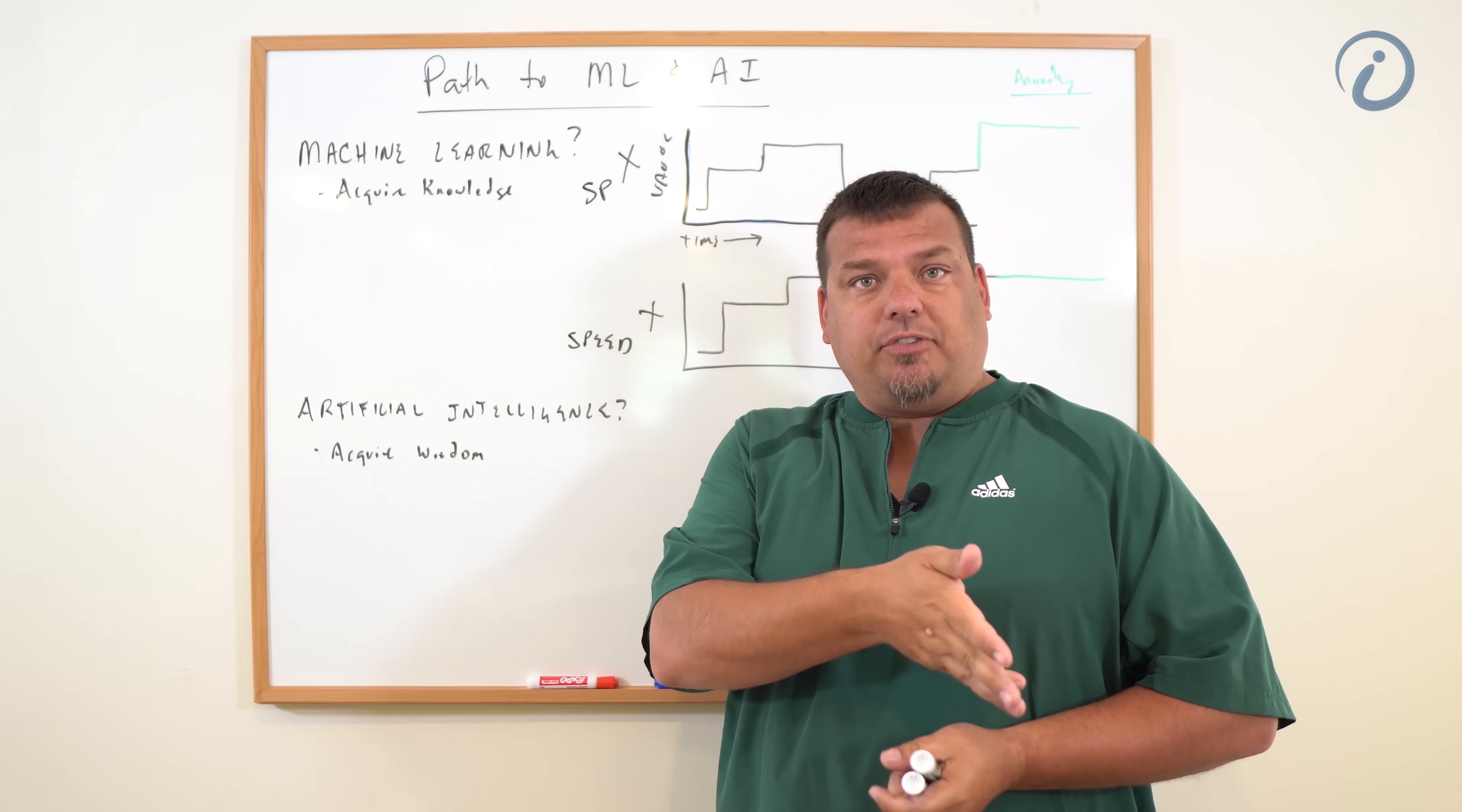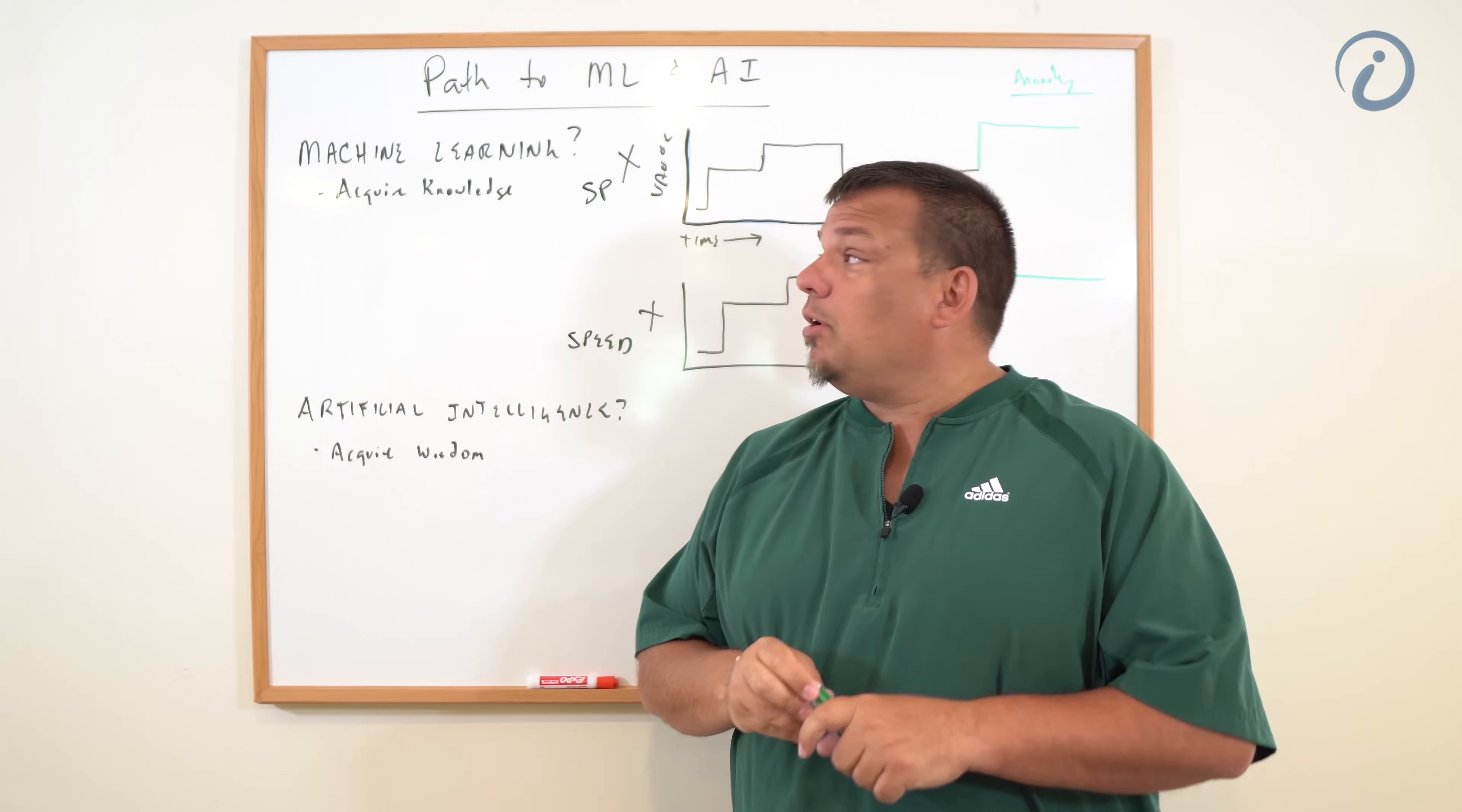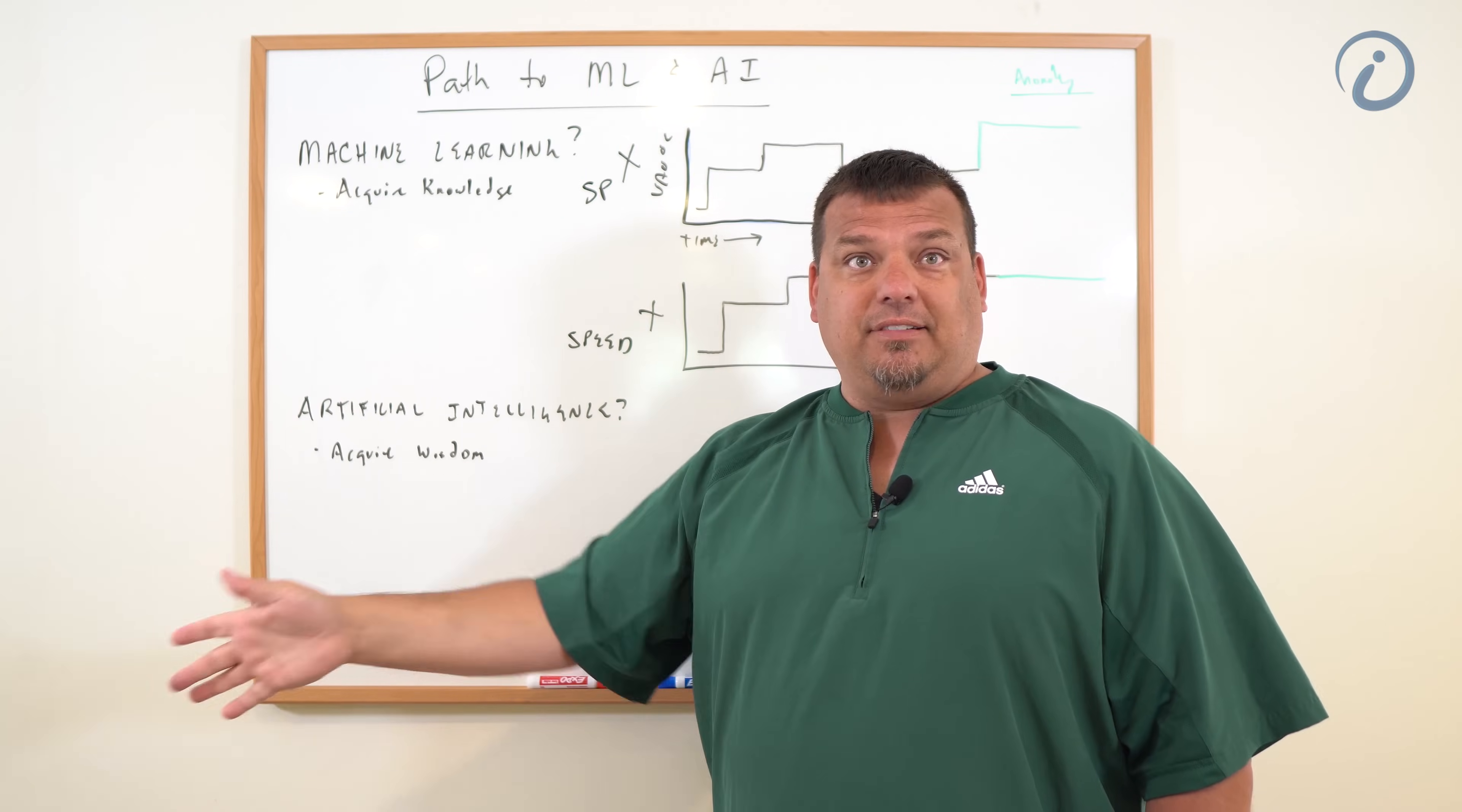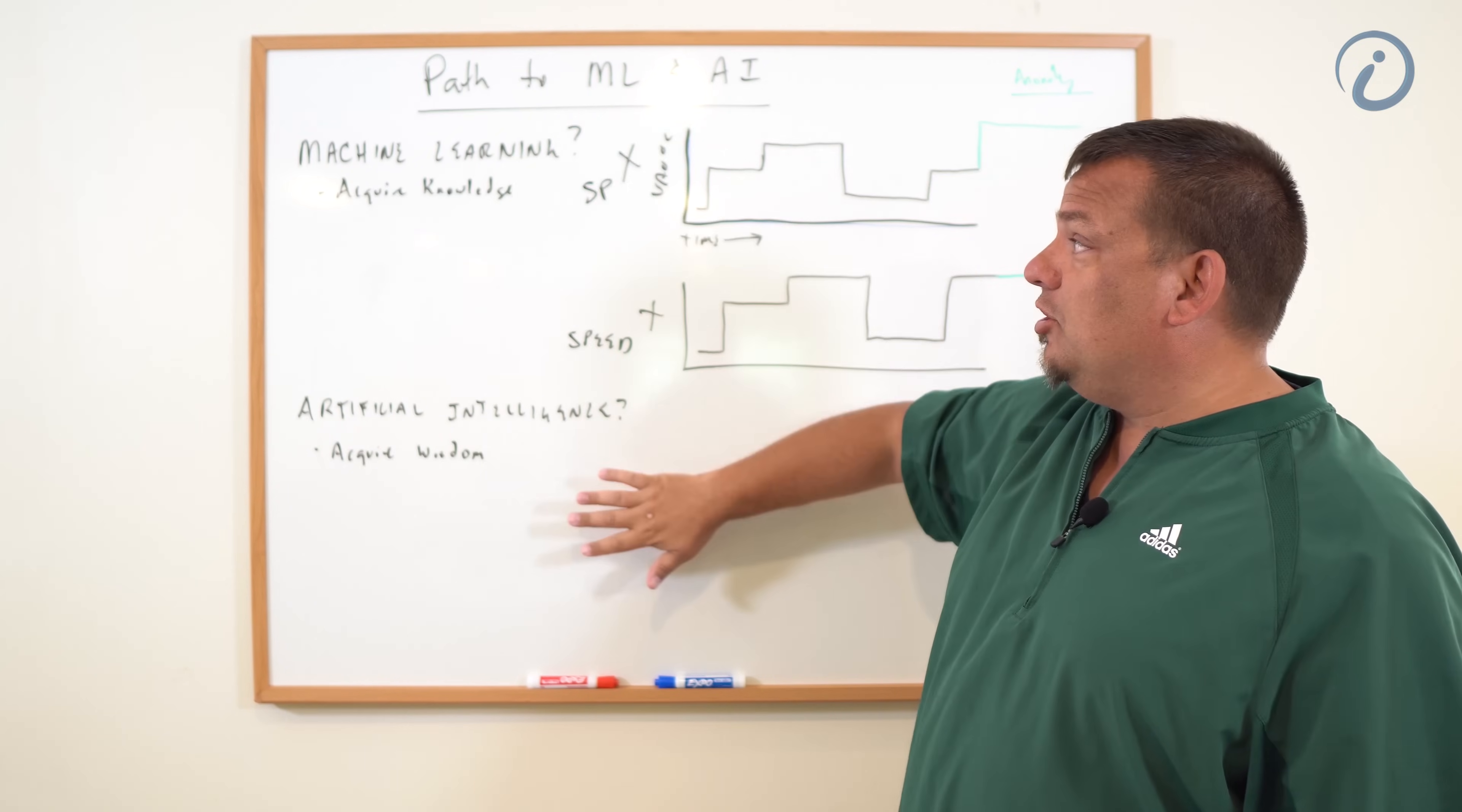For example, the Sorba platform is a closed loop machine learning platform. What it does is it acquires knowledge about the process and then publishes back what it learned to the machine to be used on the edge of the equipment. That's the difference between machine learning and AI. Machine learning is concerned with acquiring the knowledge about your process, and artificial intelligence is acquiring wisdom.